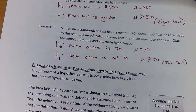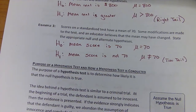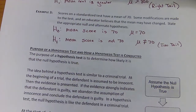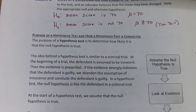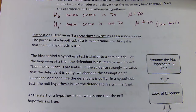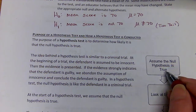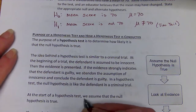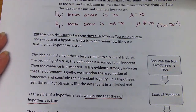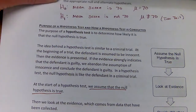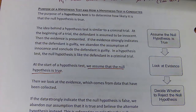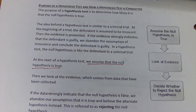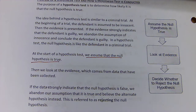The purpose of a hypothesis test is to determine how likely it is that the null hypothesis is still true. The idea behind these tests is kind of like a criminal trial — at the beginning of the trial we assume the defendant is innocent until proven guilty. So we assume that the null hypothesis is true. Then we look at the evidence from the data we collect from a sample. If the data strongly indicates that the null hypothesis is false, we can abandon our assumption and believe the alternate instead. We call this rejecting the null hypothesis.